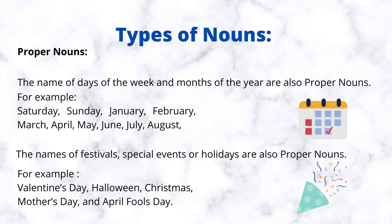Proper nouns: the name of days of the week and months of the year are also proper nouns. For example: Saturday, Sunday, January, February, March, April, May, June, July, August.